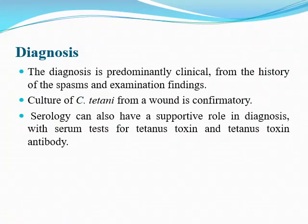The diagnosis is predominantly clinical, from the history of spasms and examination findings. The patient typically gives a history of a trivial or dirty wound a few weeks before. Culture of Clostridium tetani from a wound is confirmatory. Serology is also supportive, with serum tests for tetanus toxin and tetanus antibody — these are all confirmatory for the diagnosis.